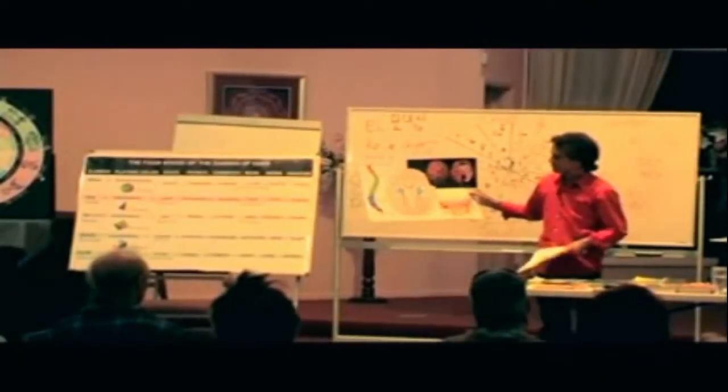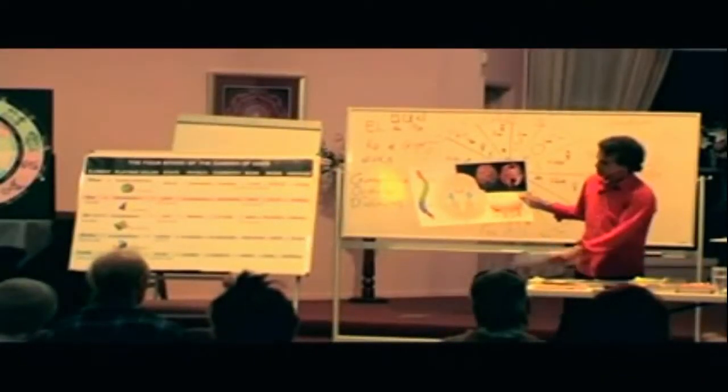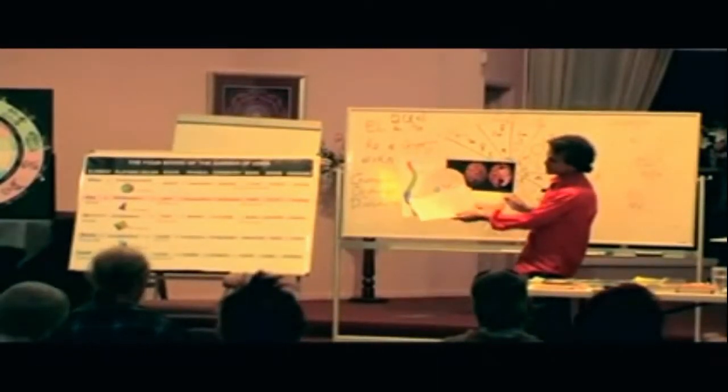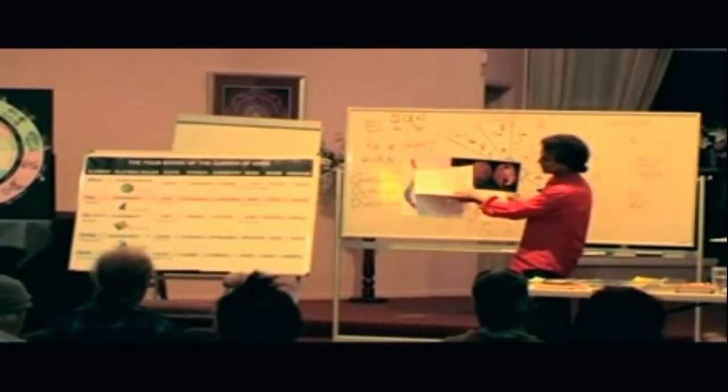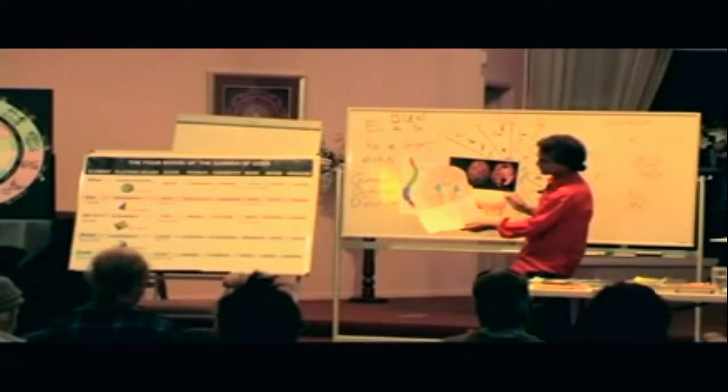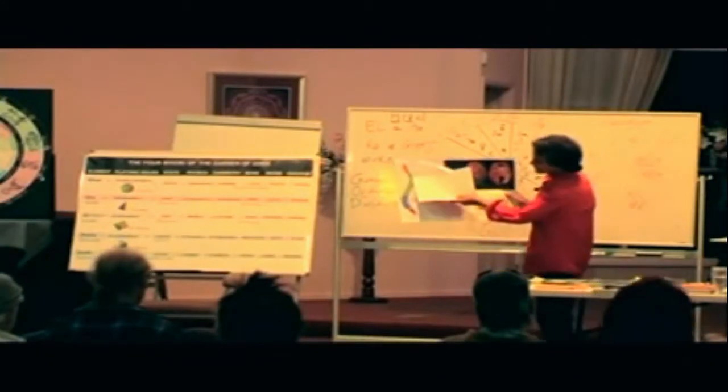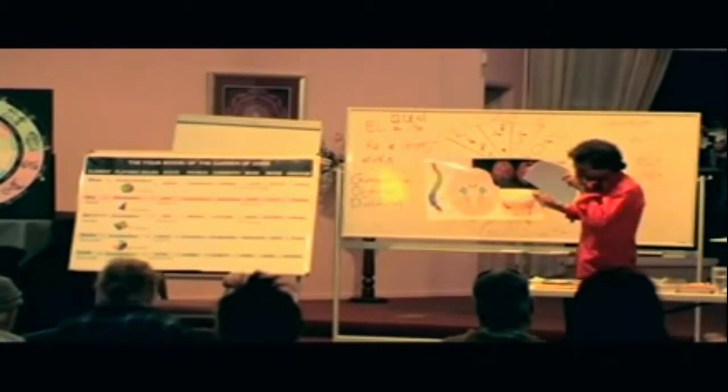You see, the Holy Land, this is the 33 bones that make the spinal column. And it's always divided into five parts.